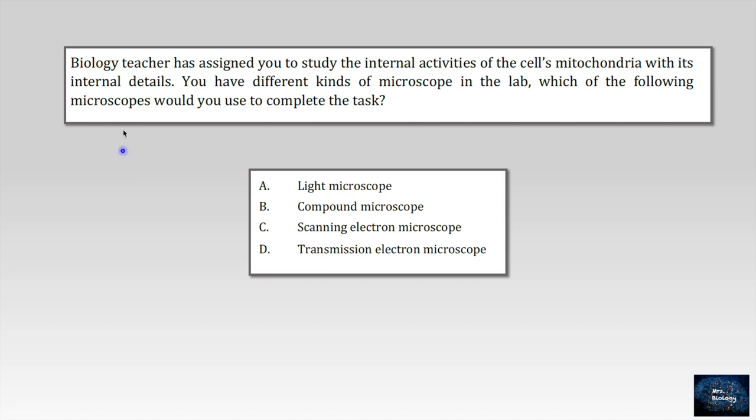Let's read this question. Biology teacher has assigned you to study the internal activities of the cells mitochondria with its internal details. You have different kinds of microscope in the lab. Which of the following microscopes would you use to complete the task? Before looking at the choices, let's understand exactly what they want from the question. They want to examine the internal activities, the details of the organelle which is mitochondria. So we have to look for an accurate microscope.